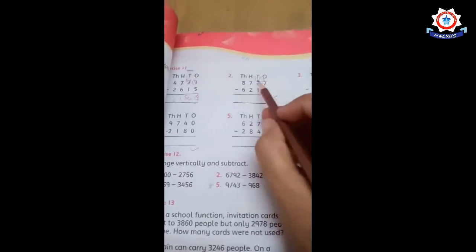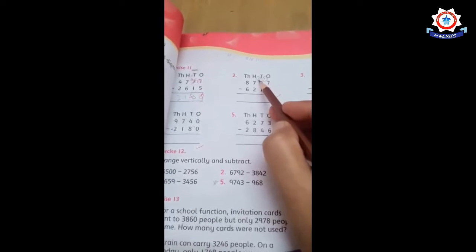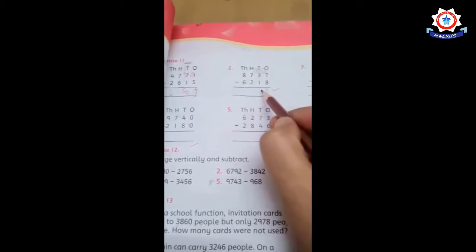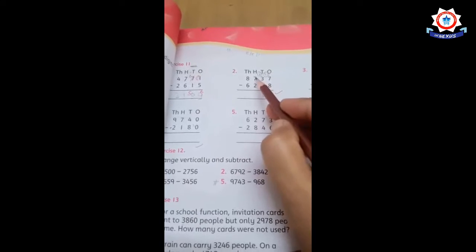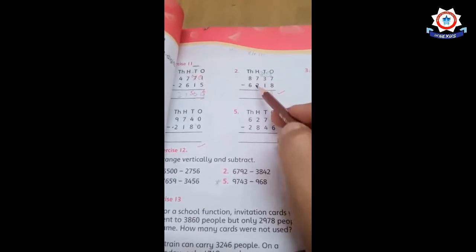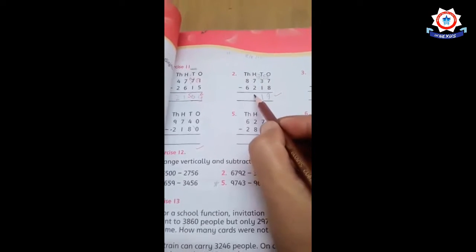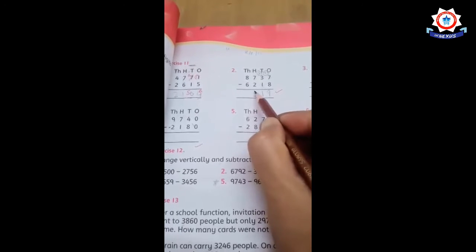Okay. Now you can see here, 2 minus 1. Then you will count on your fingers. Now we will count,